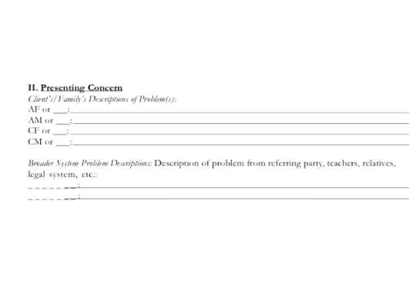In the second section, we start describing the presenting concern. Oftentimes there will be one line to describe it, but when working with a family — even if working with an individual — it's very important to think about how the problem is defined by various people who are talking about it. In collaborative therapy, they talk about a problem-organizing system, meaning the therapy system organizes itself around somebody defining a problem. When you ask people what they think the problem is, you can end up with very different definitions of what it really is.